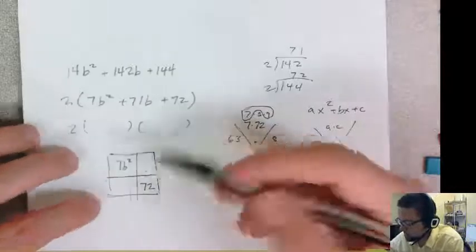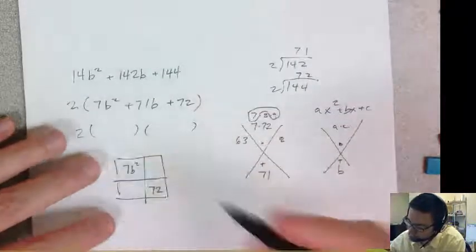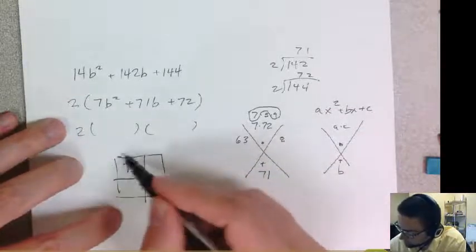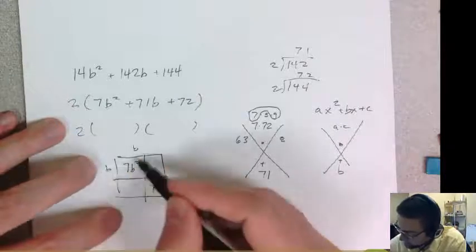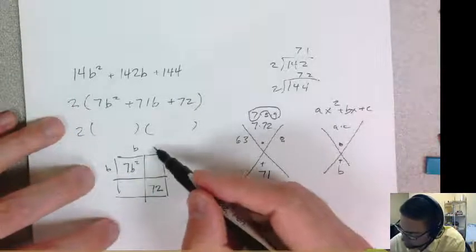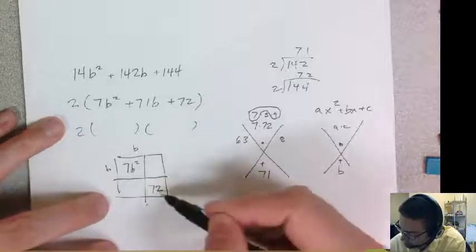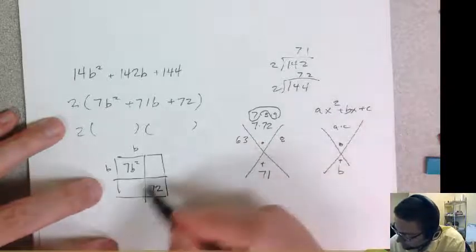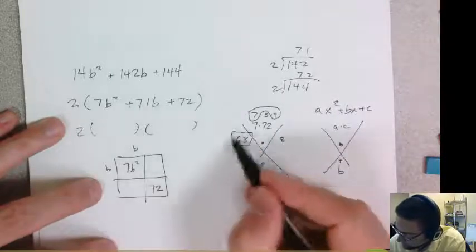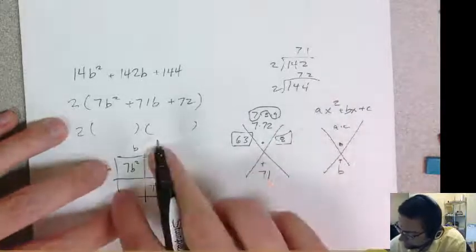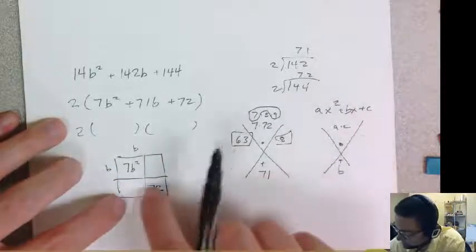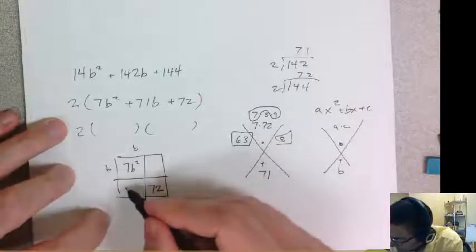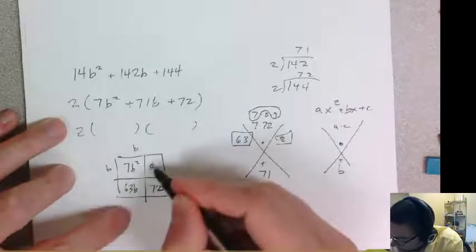And then going back to the algebra tiles, that's kind of how the algebra tiles work is we're multiplying something with a b on it and something with a b on it to get the b squared. And then some unit times some unit to get the units part. So now I can fill in these slots with my factors that I came up with, right? Because when I add these two together, they need to make the 71b. And when I multiply these two together, they make the 72. So that's 63b and 8b.